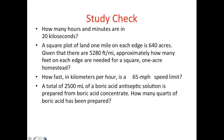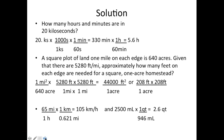For the first problem — how many hours and minutes are in 20 kiloseconds — the first step is to convert kiloseconds to seconds. In one kilosecond there are 1000 seconds, so the kiloseconds cancel. Then convert the seconds to minutes so that the seconds cancel and you get your answer in minutes.